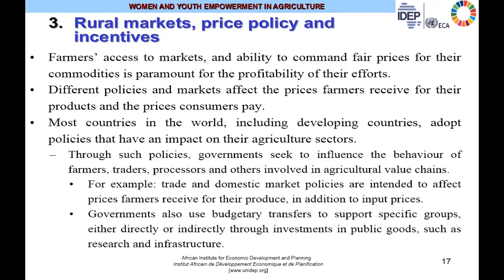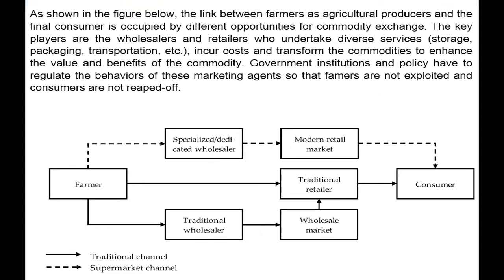Governments may also use budgetary transfers to support specific groups, directly or indirectly, through investments in public goods such as public research and infrastructure. There is a strong link between farmers as agricultural producers upstream and the final consumer downstream, generating diverse opportunities of commodity exchange. The key players in this chain are wholesalers and retailers who undertake diverse services — storage, packaging, and transportation — incurring costs and transforming commodities to enhance their value and benefits.